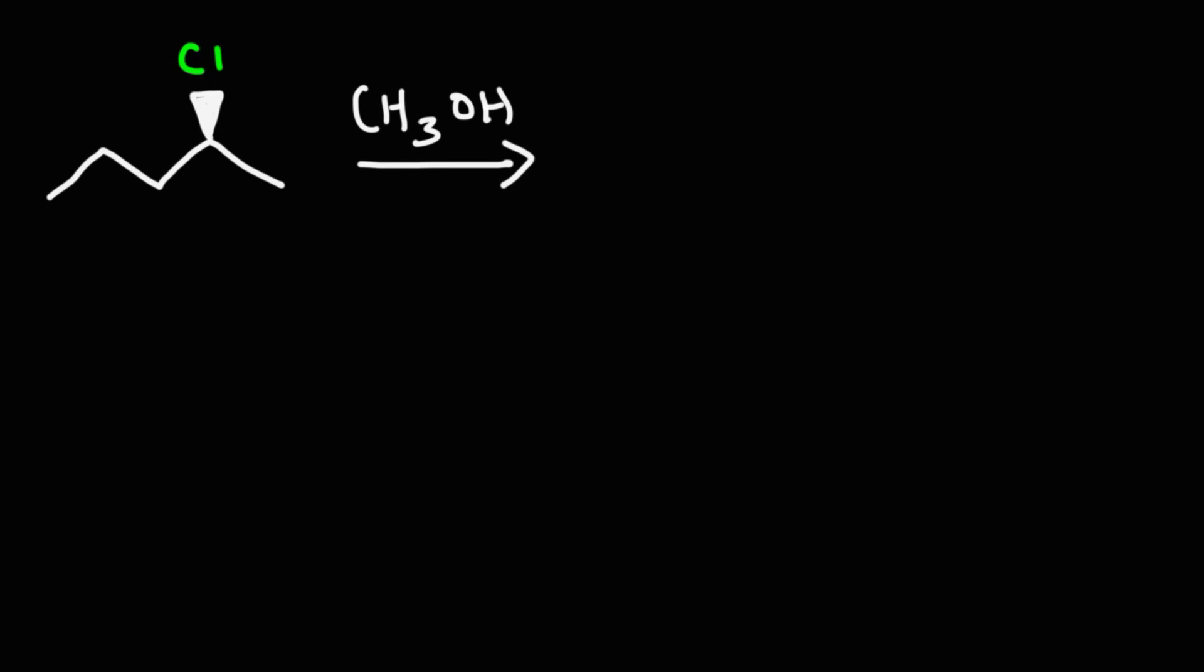Consider the reaction between S2-chloropentane with methanol. What are the major products for this reaction? Now what we have here is a secondary alkyl halide with a polar protic solvent, methanol, and so this is going to favor the SN1 reaction.